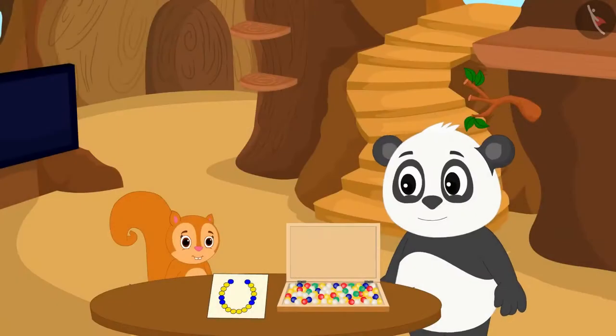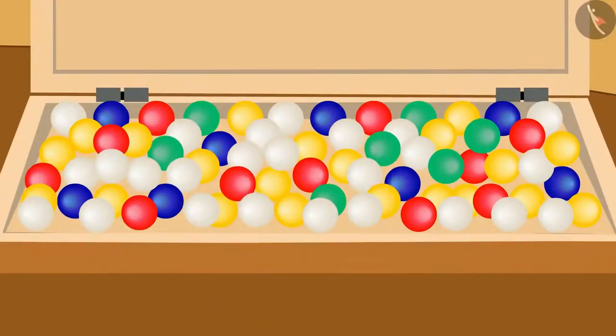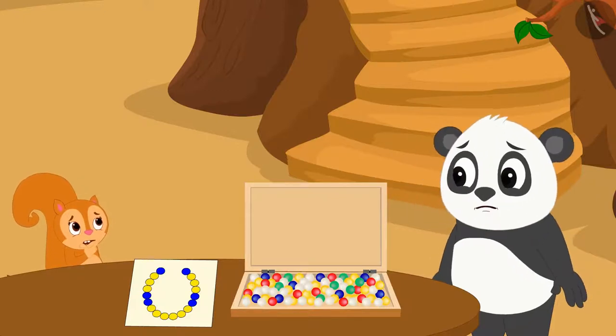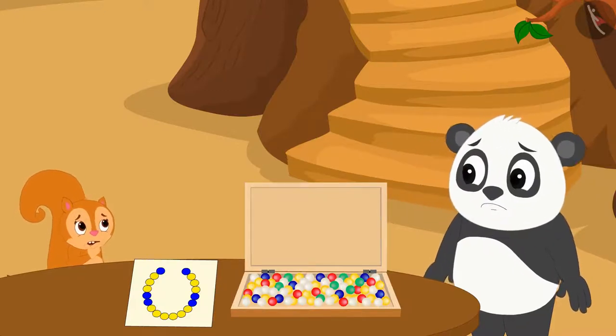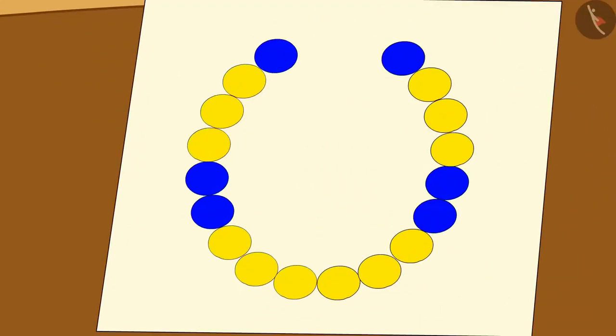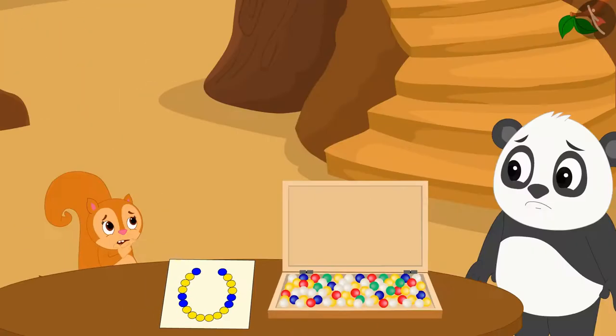But all the beads are scattered. Chanda and Golu are not able to understand whether they have enough blue and yellow beads to make the necklace according to Golu's design or not.